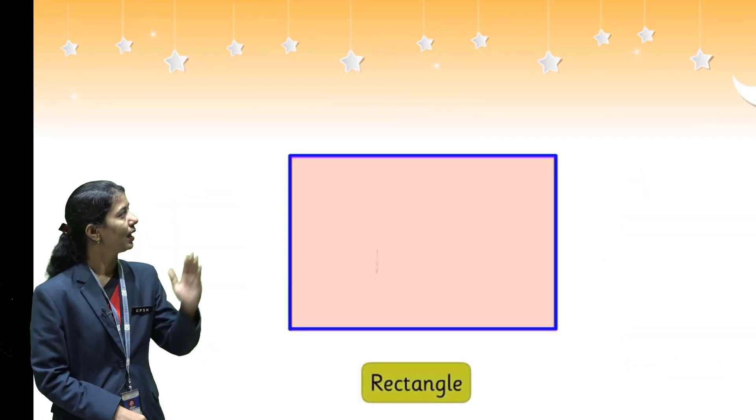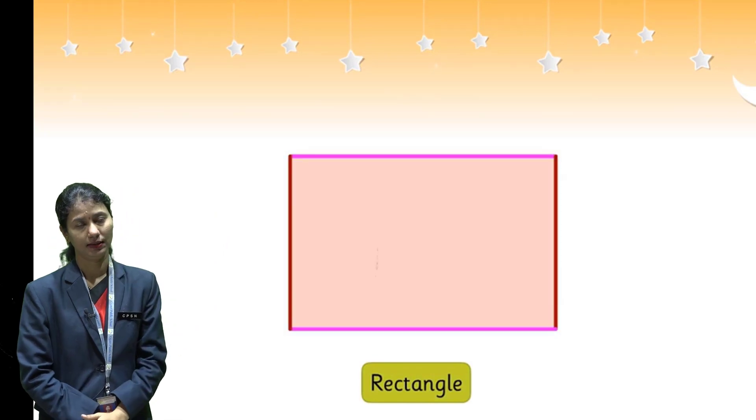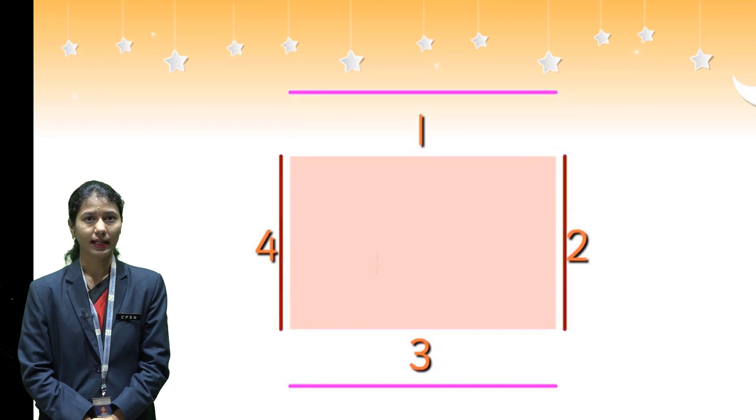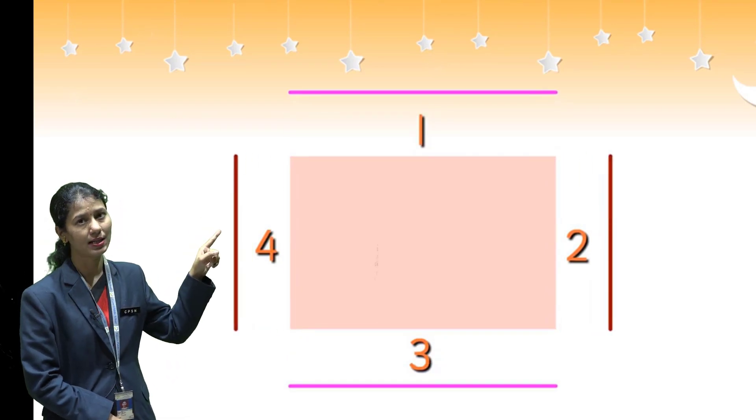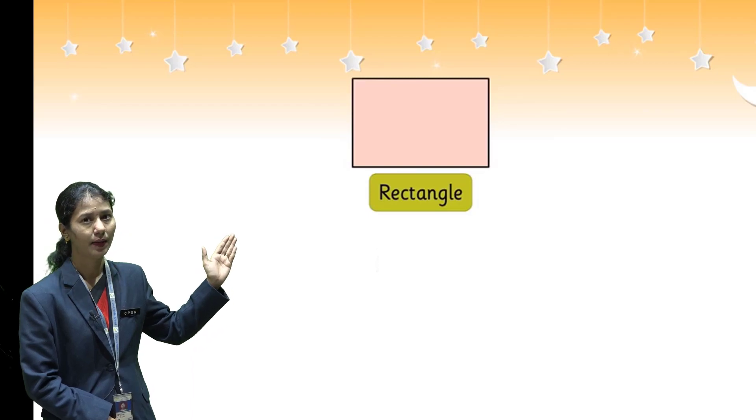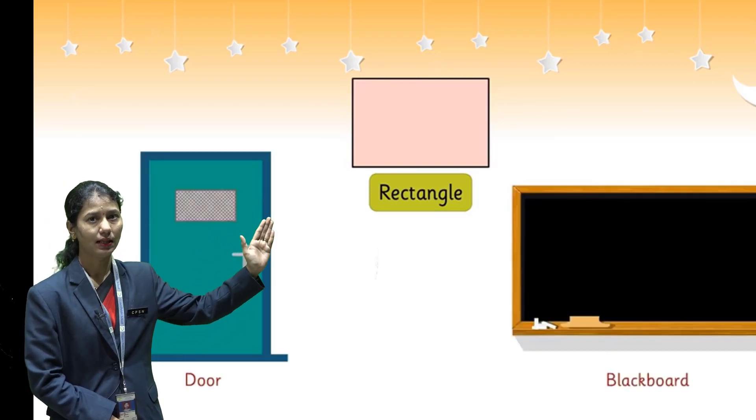Next one, this is called rectangle. Rectangle has also four sides and four corners. Rectangle has two sides equal. Examples of rectangle are a door and a blackboard.